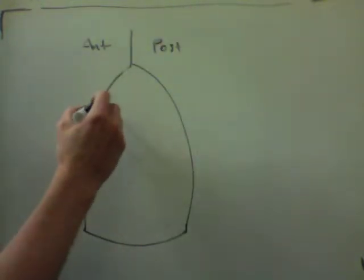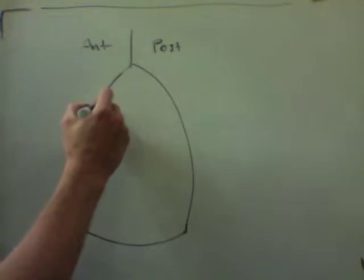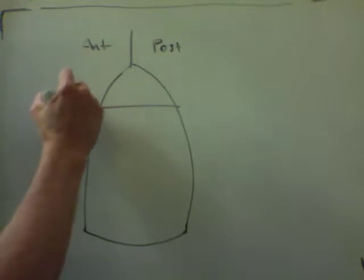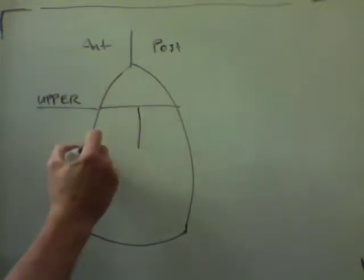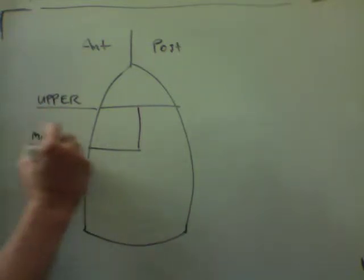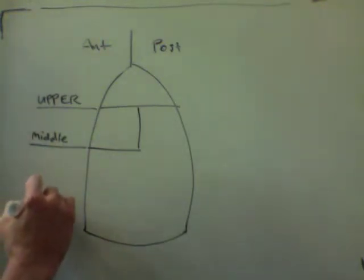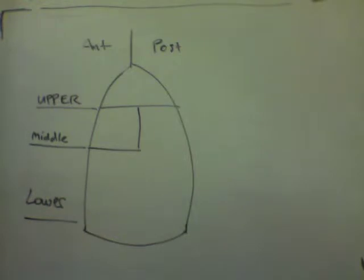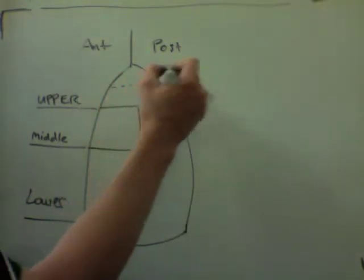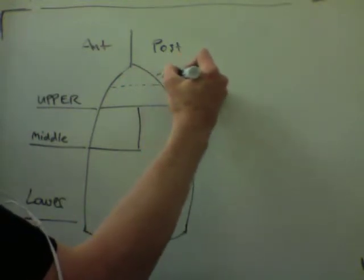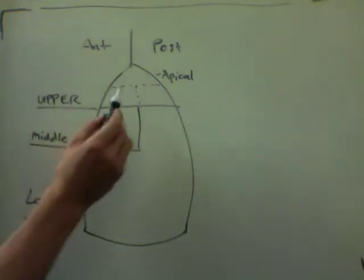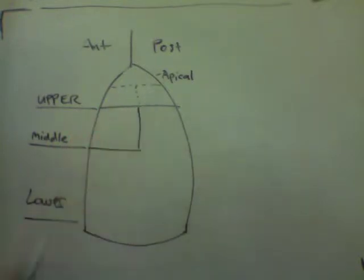We'll divide the lungs into their lobes: the upper lobe, the middle lobe on the right, and then the lower lobe right and left. We'll divide these up into their segments — this is the apical segment of the right and left lobes, and this divides the anterior from the posterior upper lobes.